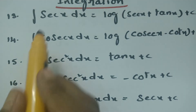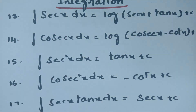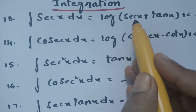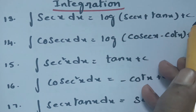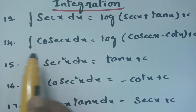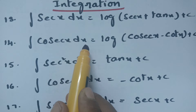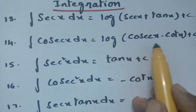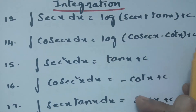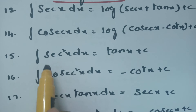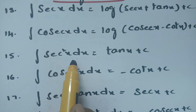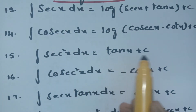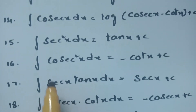Integral of sec x dx is nothing but log(sec x + tan x) plus c. Integral of cosec x dx is nothing but log(cosec x − cot x) plus c. Integral of sec²x dx is nothing but tan x plus c.